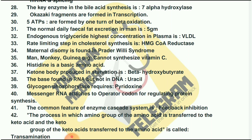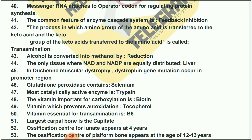Messenger RNA attaches to the operator codon for regulating protein synthesis. The common feature of enzyme cascade system is feedback inhibition. The process in which the amino group of an amino acid is transferred to a keto acid and the keto group of the keto acid is transferred to the amino acid is called transamination.